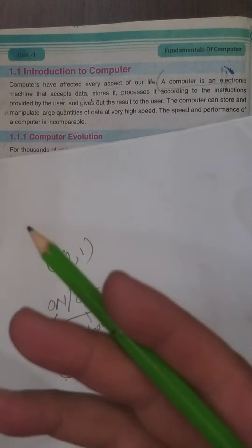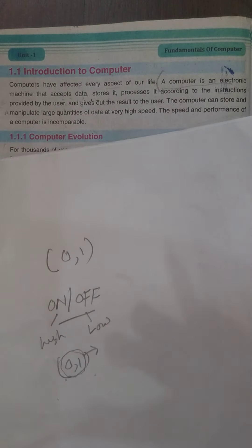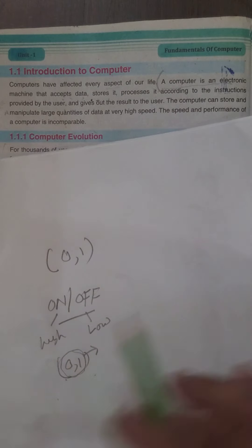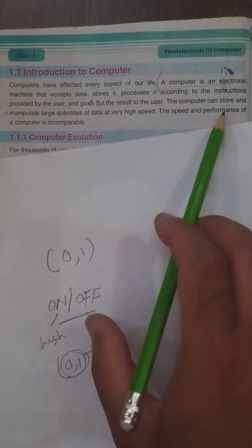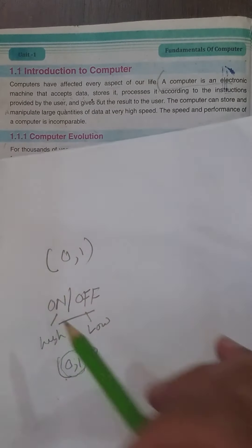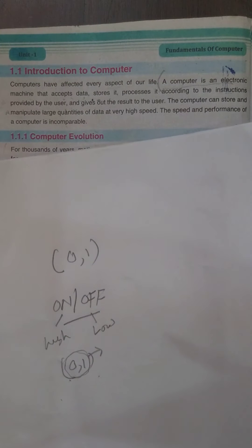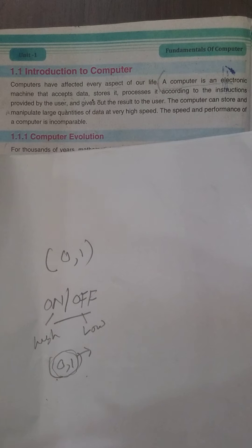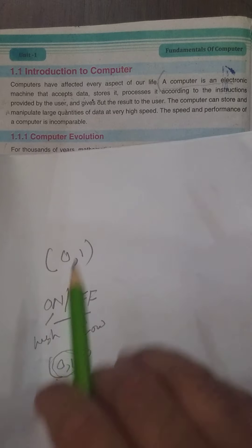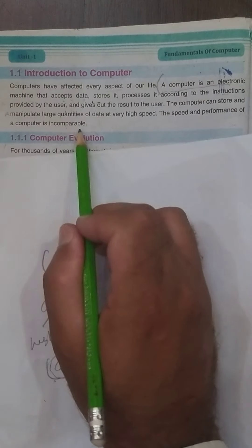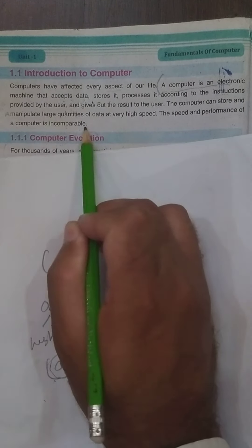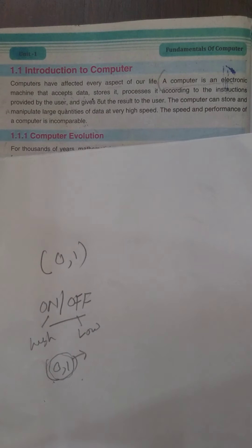کوئی user multiplication یا division کرنا چاہے تو اس لحاظ سے process کرے گا۔ 'The computer can store and manipulate' — manipulate means to solve — 'large quantities of data at very high speed.' 'The speed and the performance of a computer is incomparable' — incomparable means جس کے کوئی مثال نہ ہو۔ یہ تھا ہمارے پاس Introduction to Computer۔